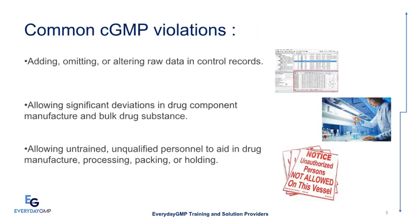Common CGMP Violations: There are so many violations, but some common observations are found in many audits. One is adding, omitting, or altering raw data in control records. Another is allowing significant deviations in drug component manufacture and bulk drug substance. Also, allowing untrained or unqualified personnel to aid in drug manufacture, processing, packing, or holding.